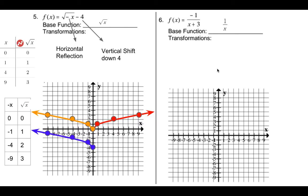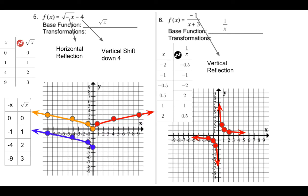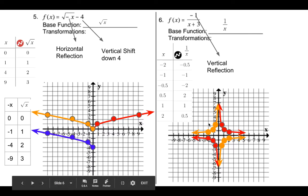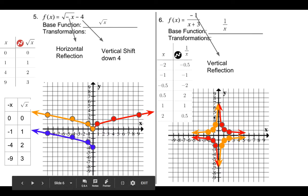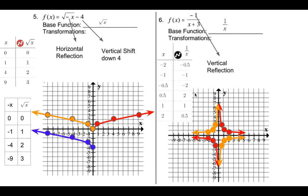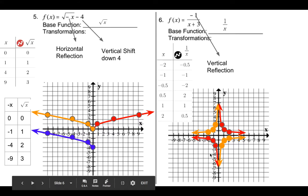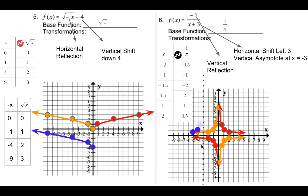The next one is 1/x again, with the same base points as before. The negative sign is a vertical reflection, so we multiply all y values by negative one — the graph reflects over the x-axis. Note that for 1/x, a horizontal reflection looks the same as a vertical one. Then shifting left three changes the vertical asymptote from x equals zero to x equals negative three, and all points shift left three.